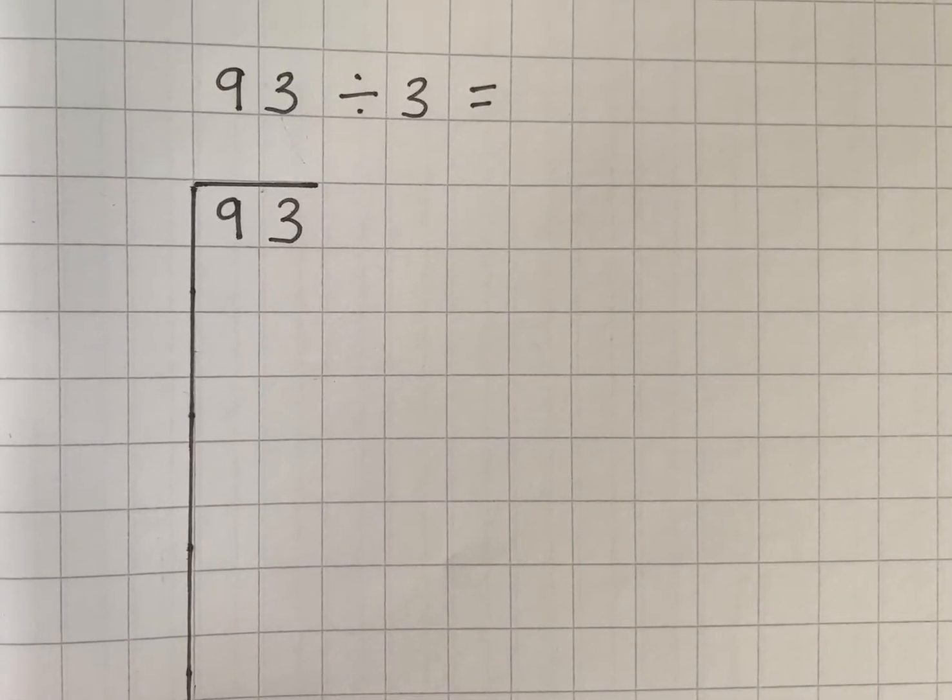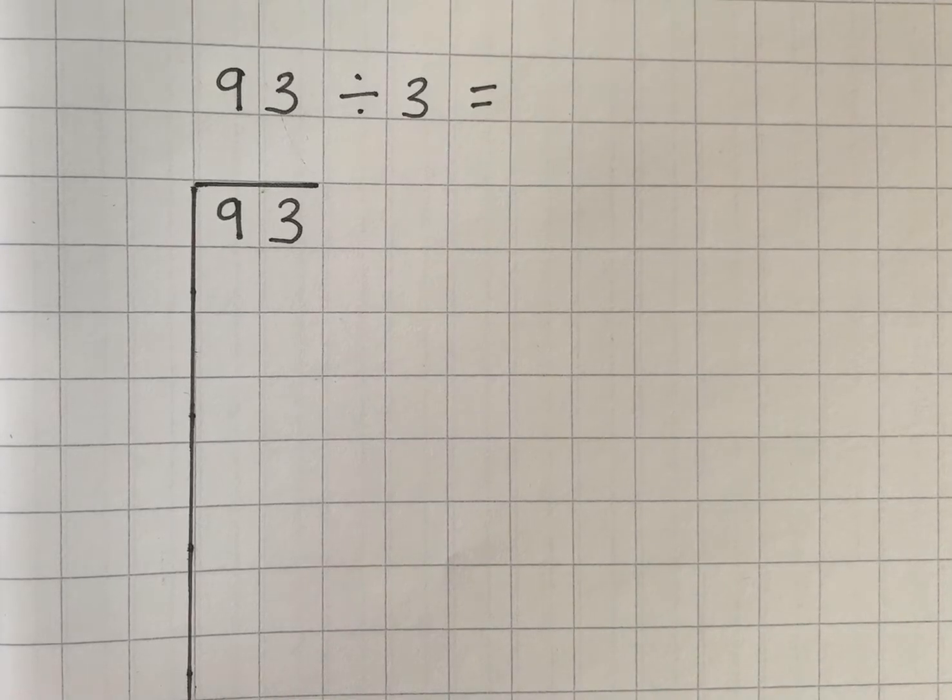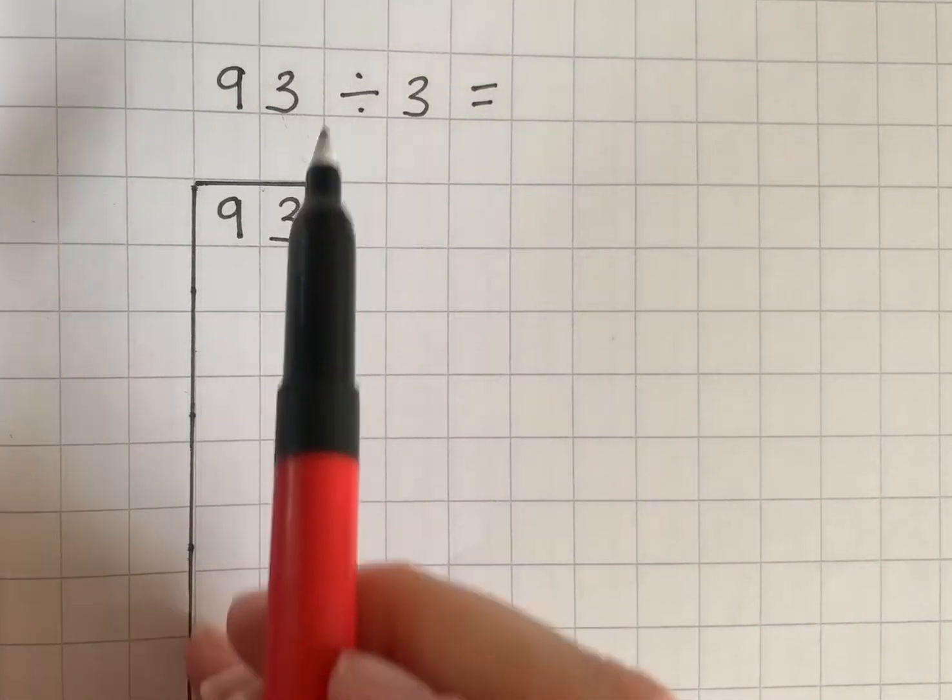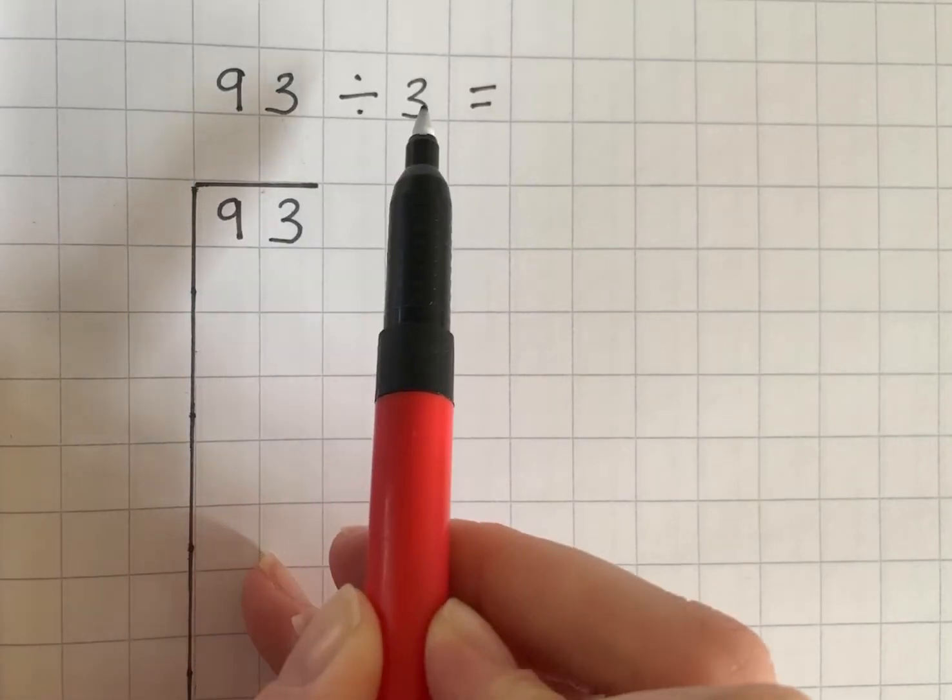Hi everyone, so today we are going to look at the bus stop chunking method and the calculation we're going to focus on at first is 93 divided by 3.